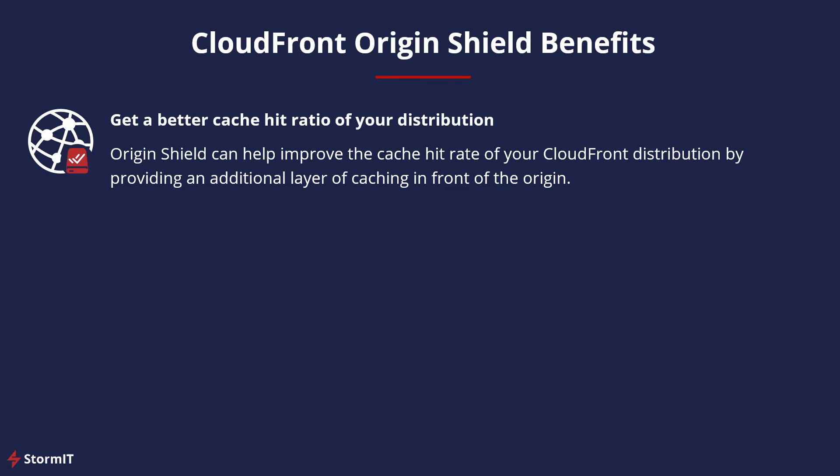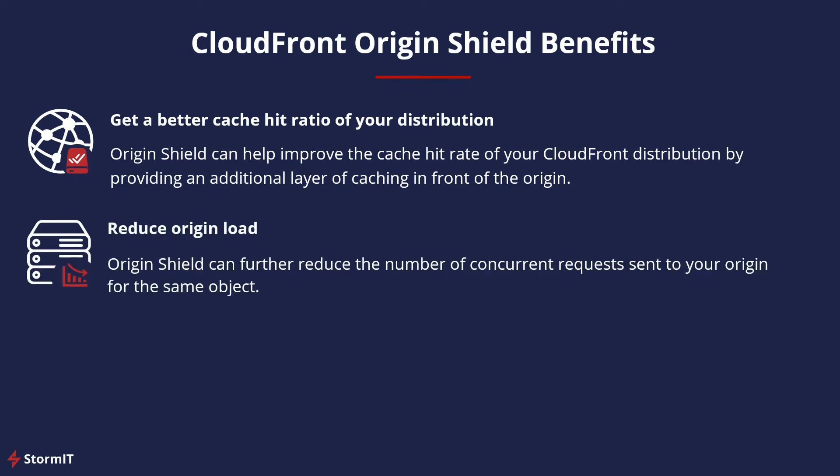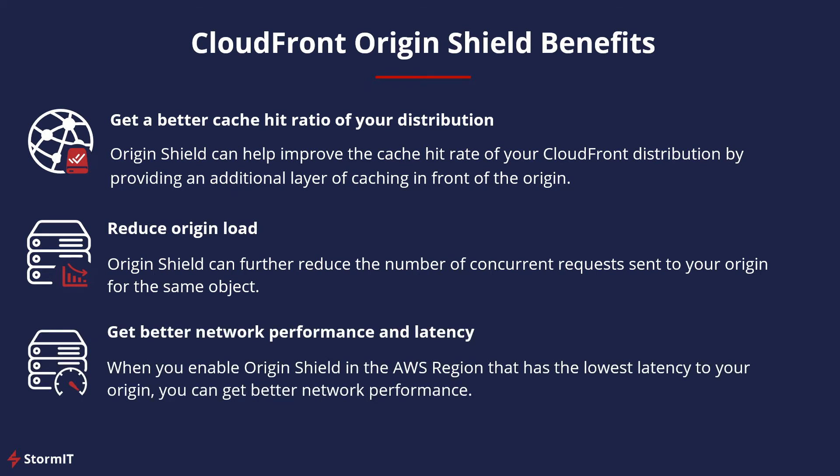The link is in the description below. The second benefit is that you can reduce origin load. Origin Shield can further reduce the number of concurrent requests sent to your origin for the same object. Requests for content not in Origin Shield's cache are merged with other requests for the same object, so only one request is sent to your origin.